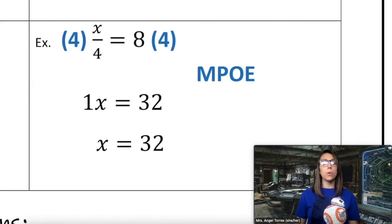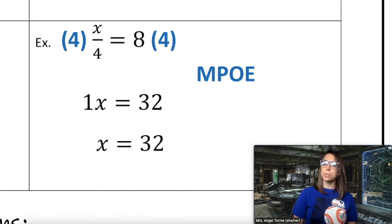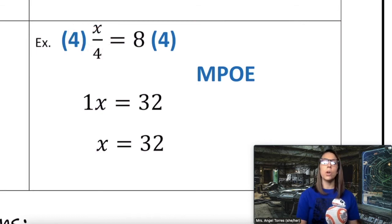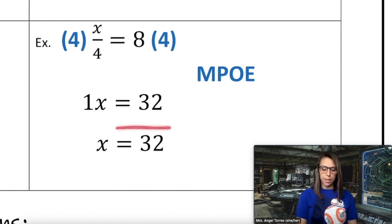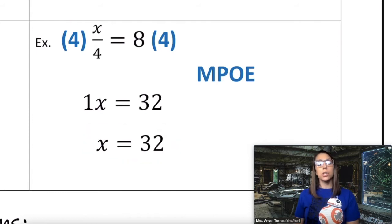Finally, in this equation we had division — x divided by 4. To undo division, we're going to use multiplication. This puts a 4 in the numerator, and 4 divided by 4 is another big 1. 1x gives you x by itself, and multiplying on the other side results in x equals 32. So when you see division in a term, we think MPO.